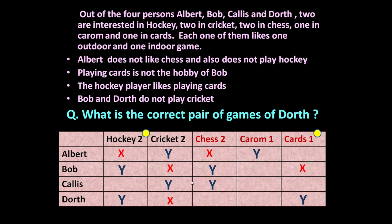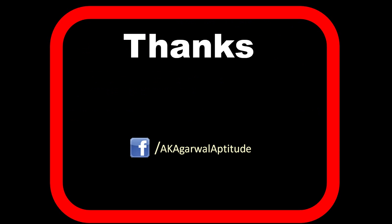Now the table is complete. Every player plays one outdoor and one indoor game. Based on this, the correct pair of games of Dorth is hockey and cards. Friends, thank you very much for watching this video. You can also follow me on Facebook.